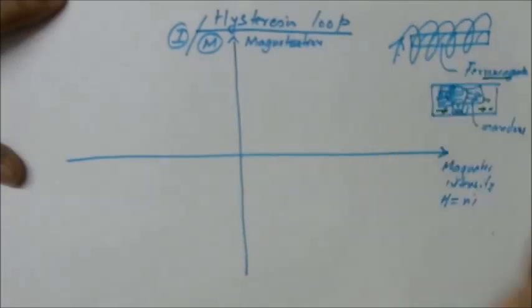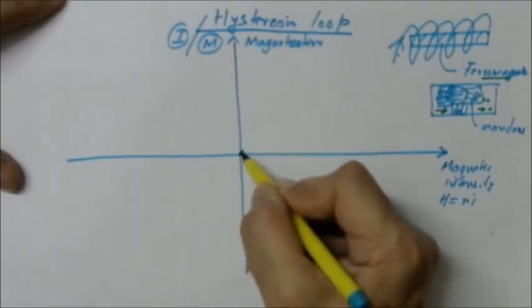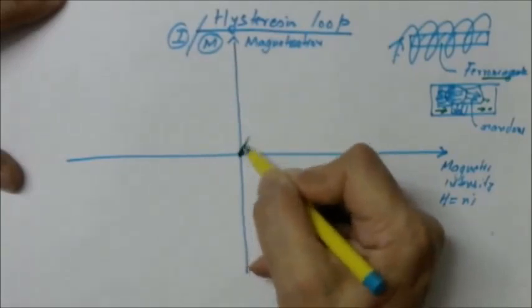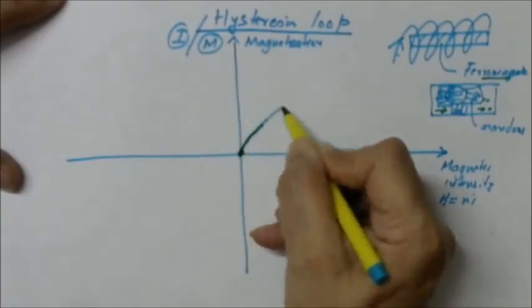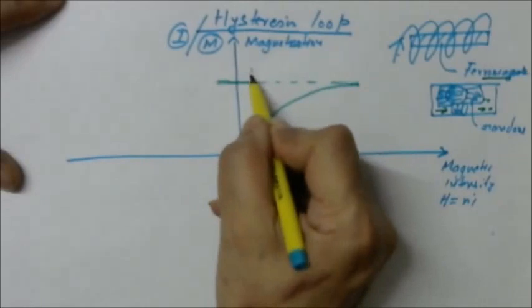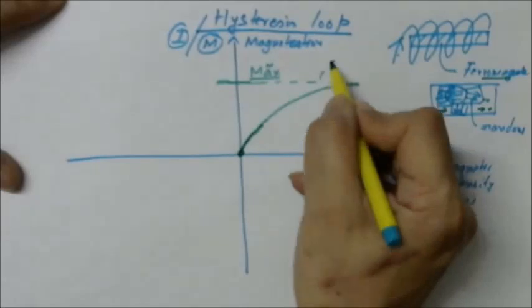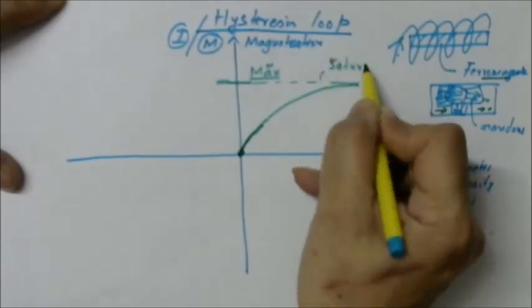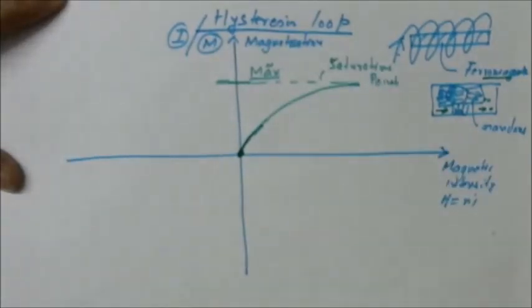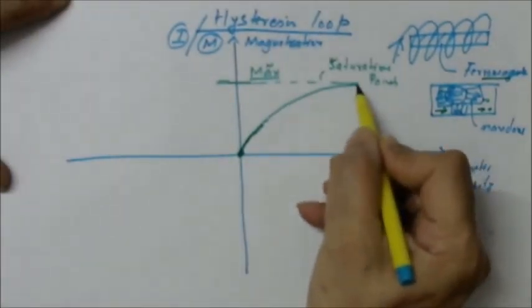When there is an external magnetic field, the domains align in a particular direction and produce a magnetic field. When current is zero there is no magnetization, but as the current is increased, H increases and magnetization increases, finally reaching the saturation level. This maximum magnetization point is called the saturation point.